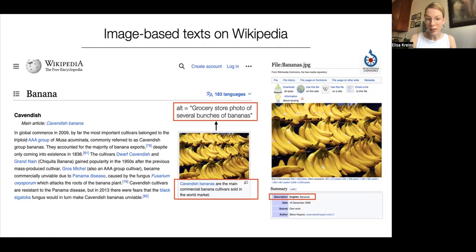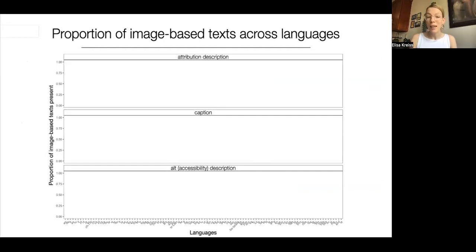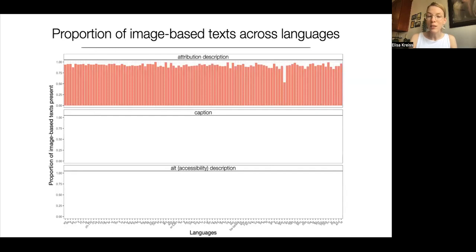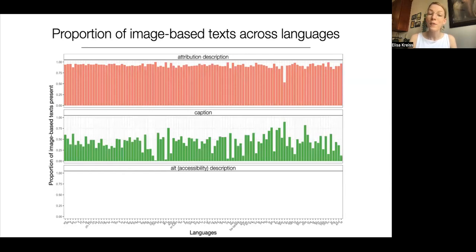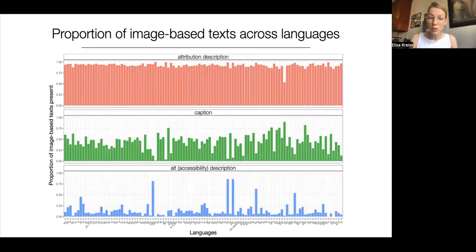All of these texts relate to the image directly, so let's inspect how often they're present on Wikipedia. This data analysis is performed on the WIT dataset, which contains crawled Wikipedia data from 2020 covering 108 languages. Starting with attribution descriptions — the ones on Wikimedia Commons — across languages, almost all images have some attribution description present, though it could be in a language different from the article. About 50% of images have captions. Alt descriptions for accessibility are the least available, covering on average 10% of the images in a given language, which already points to a universal image accessibility issue on Wikipedia.